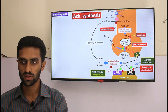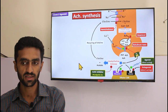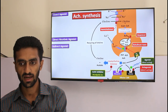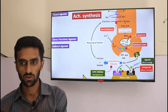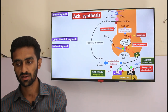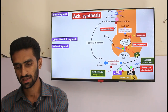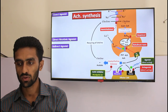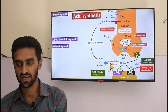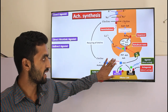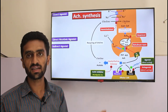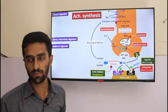Our cholinergic agonists start now. Direct agonists directly stimulate muscarinic and nicotinic receptors. Indirect agonists are acetylcholinesterase inhibitors — they increase acetylcholine levels by inhibiting acetylcholinesterase. If this enzyme is inhibited, acetylcholine levels increase in the synaptic cleft, increasing parasympathetic activity.